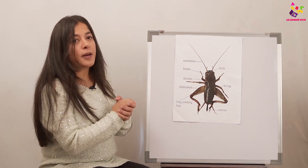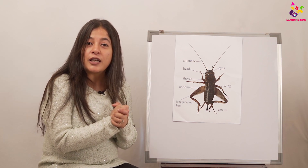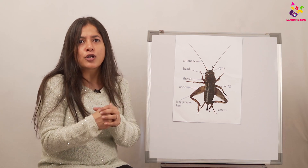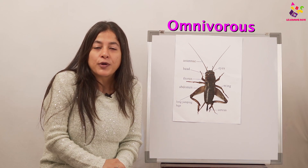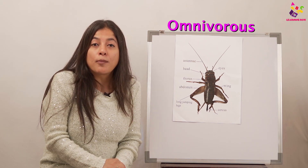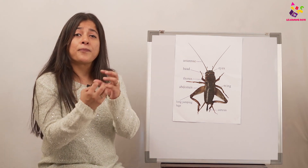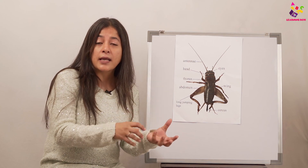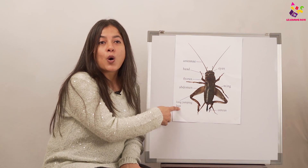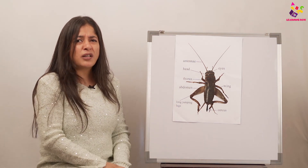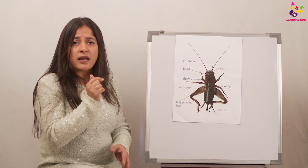So that is all about the cricket's body. Now, what does the cricket eat? The cricket eats plants, leaves, and also other tiny insects — that is why it is omnivorous. Omnivorous creatures eat both vegetarian and non-vegetarian food, meaning leaves, fruits, plants, and also other creepy crawlies. So the cricket is omnivorous!